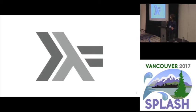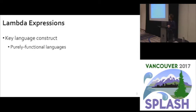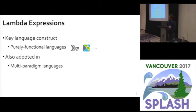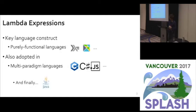This is the logo of Haskell, one of the purely functional programming languages. If you look at this logo, you can easily distinguish the lambda character in it. Lambda expressions are a construct for purely functional programming languages such as Haskell and Elm, but they've also been adopted in many multi-paradigm programming languages such as C++, C#, and JavaScript.